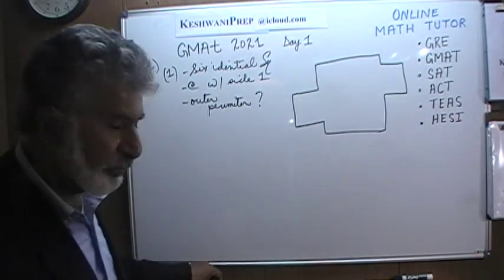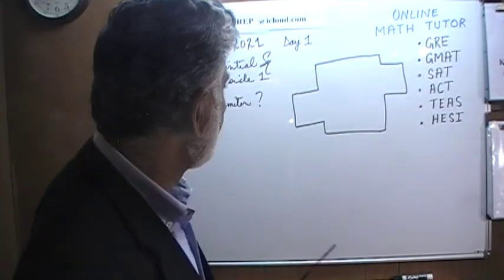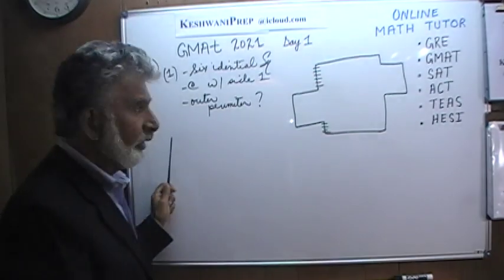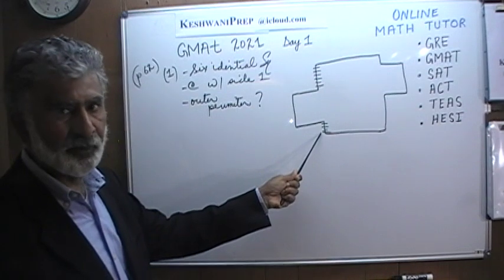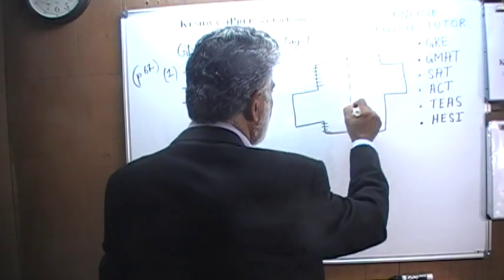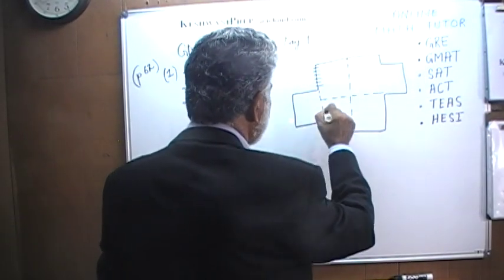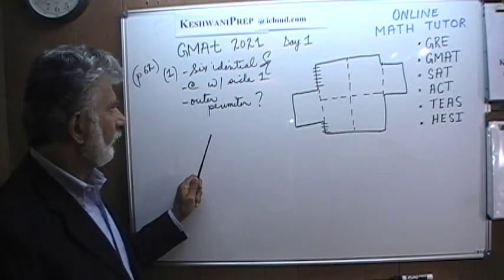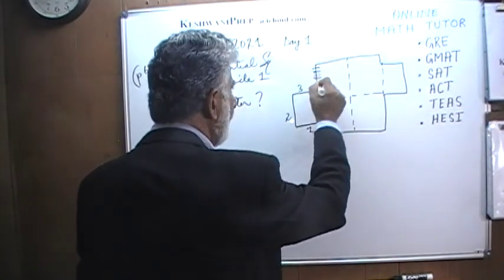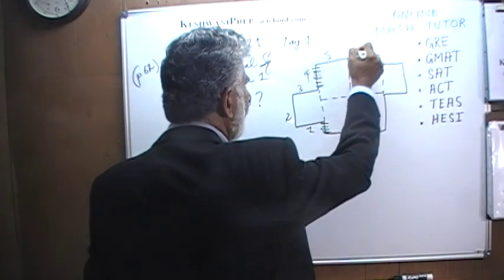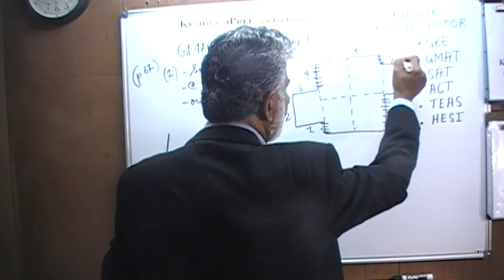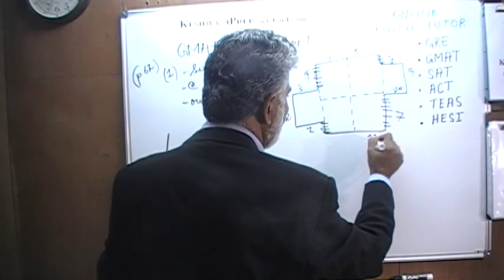The question is: what is the outer perimeter? Because the squares are identical with side one, it doesn't matter where each side ends. Let's just count the sides: one, two, three, and this part and this part makes four, five, six, and again this part and that part is seven, then eight, nine, ten, eleven, and twelve.